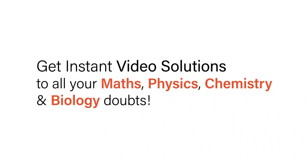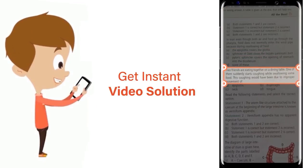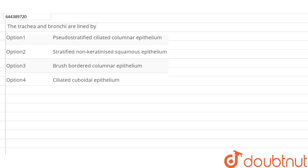With Doubtnet, get instant video solutions to all your maths, physics, chemistry and biology doubts. Just click the image of the question, crop the question, and get instant video solution. Download Doubtnet app today. In this question, we have to select the type of epithelium with which the trachea and the bronchi have been lined.